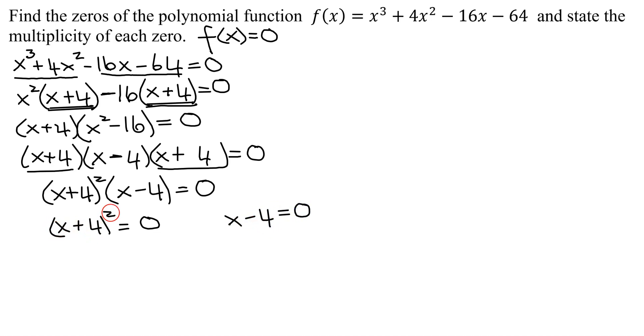So (x + 4)² = 0 or x - 4 = 0. Let's solve these. (x + 4)² = 0. When x + 4 = 0, subtract 4 from both sides, I get x = -4. For x - 4 = 0, add 4 to both sides, I get x = 4. So now I have found my two zeros.